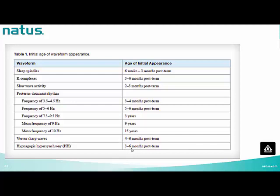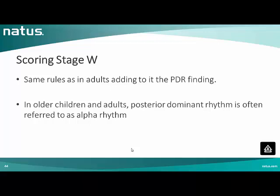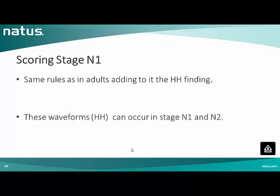Scoring stage W in children follows the same rules as in adults, with the addition of the PDR finding. In older children and adults, PDR is often referred to as alpha rhythm. Stage N1 follows the same rules as in adults, with the addition of hypnagogic hypersynchrony, which can occur in stage N1 and N2.